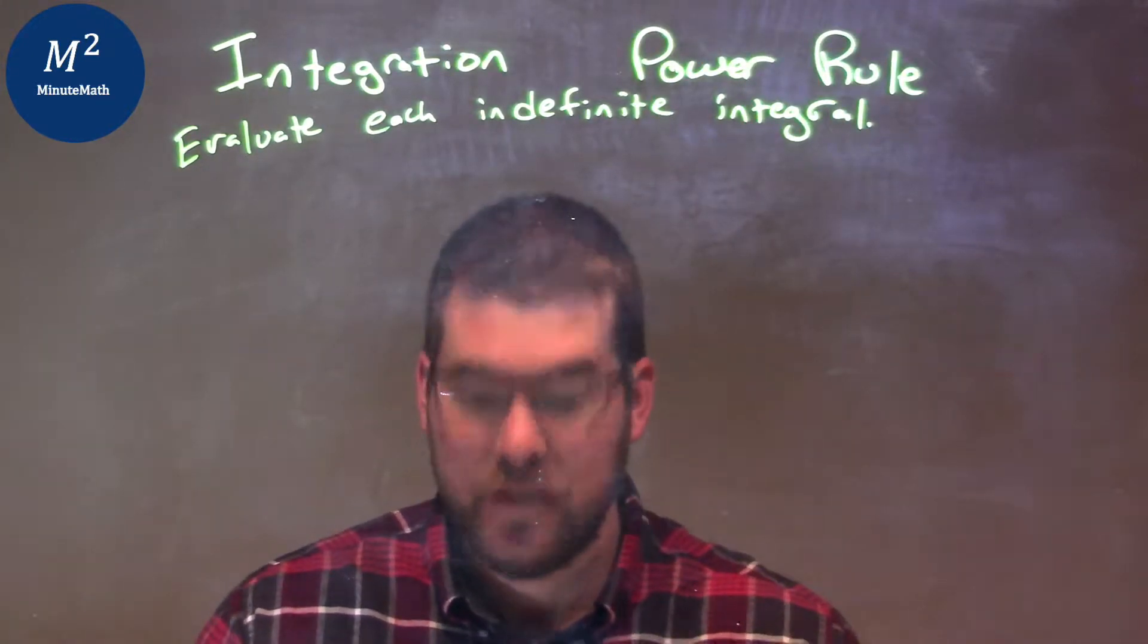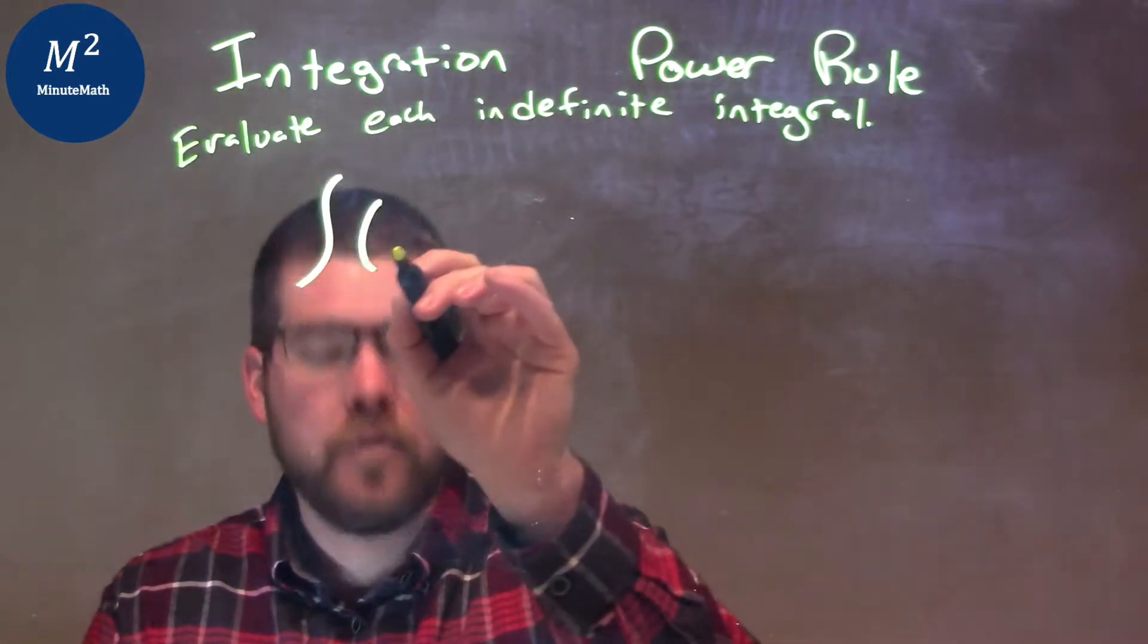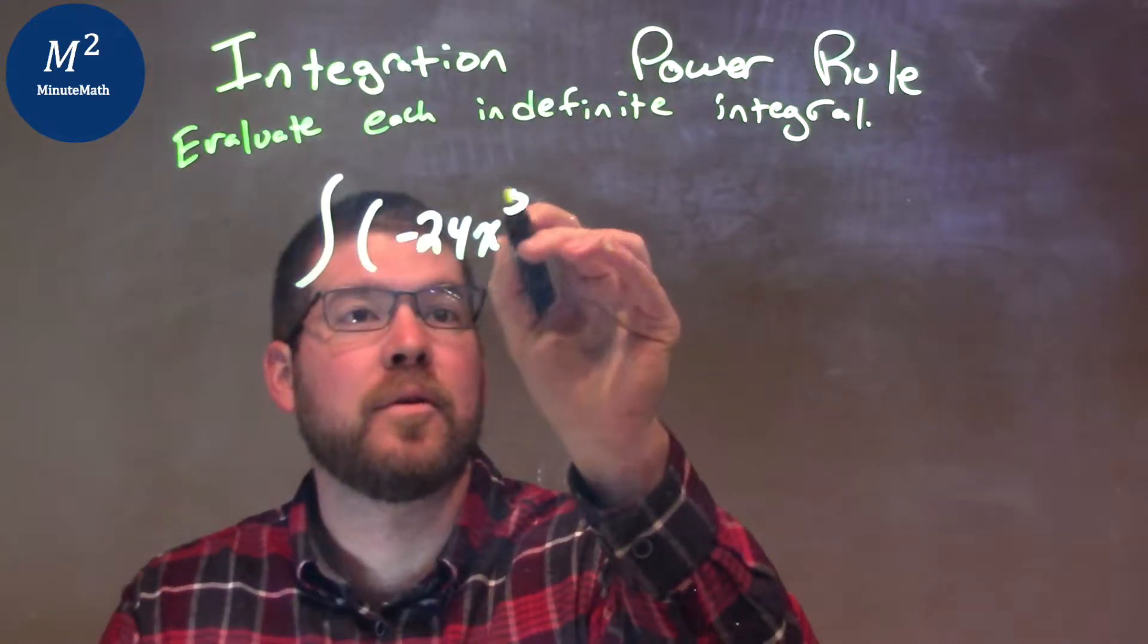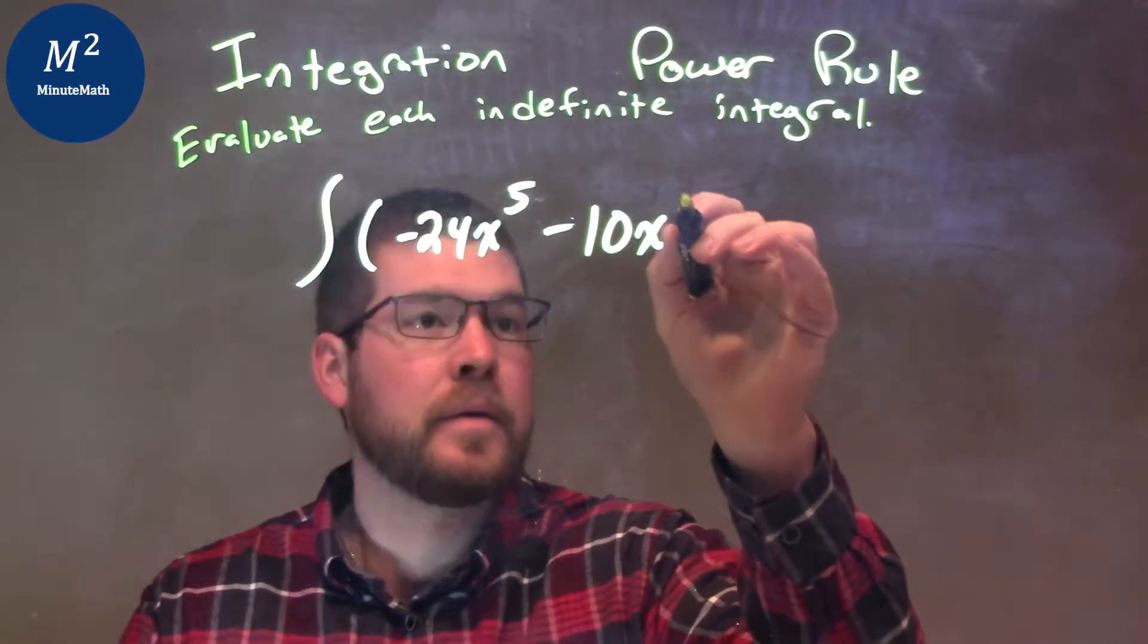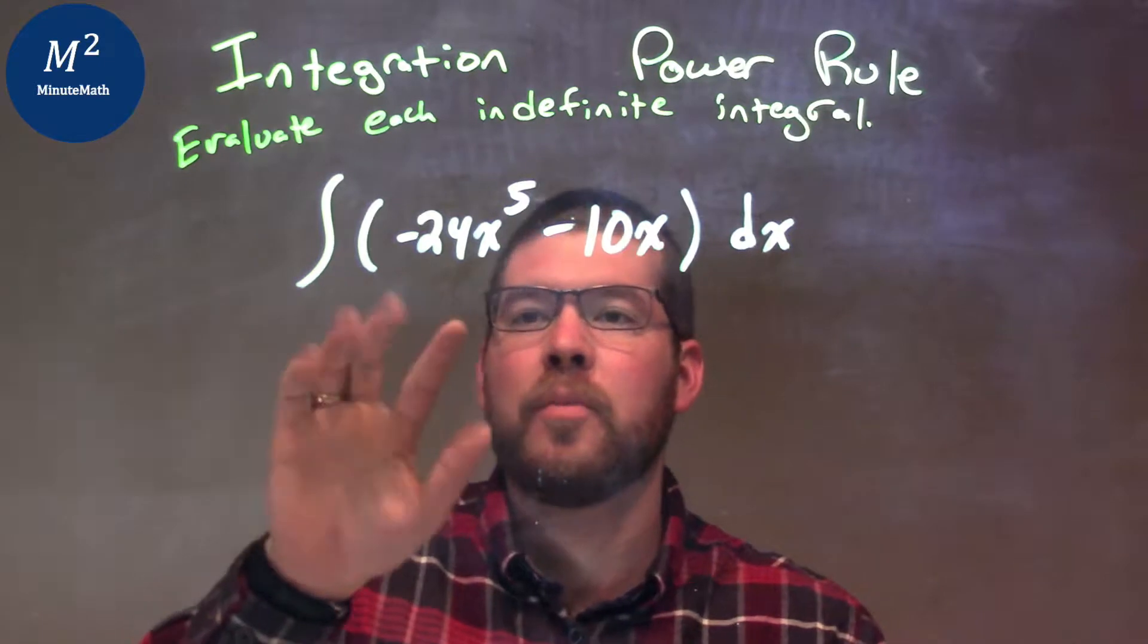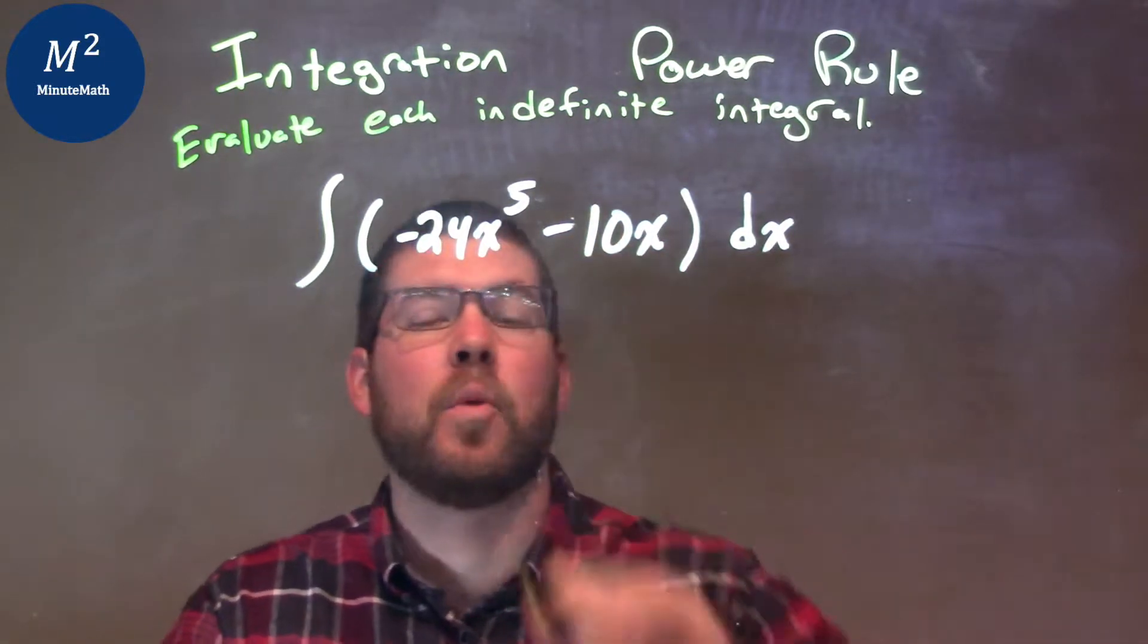If I was given this integral, I have an integral of negative 24x to the fifth power minus 10x dx. Okay. Now what we can do is take the integral of both parts individually here. So we're going to do the power rule of each one here.